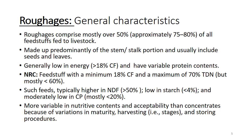Here are some general characteristics of roughages. Roughages comprise more than 50 percent of all feedstuffs fed to livestock in Pakistan — a very significant figure, since the majority of farmers in Punjab use wheat straw daily to feed their animals. Roughages are made up predominantly of the stem and stalk portion and usually include seeds and leaves, but the major component is stem and stalk. They are generally low in energy — less than 60 percent TDN — have more than 18 percent crude fiber, and their protein contents are variable.